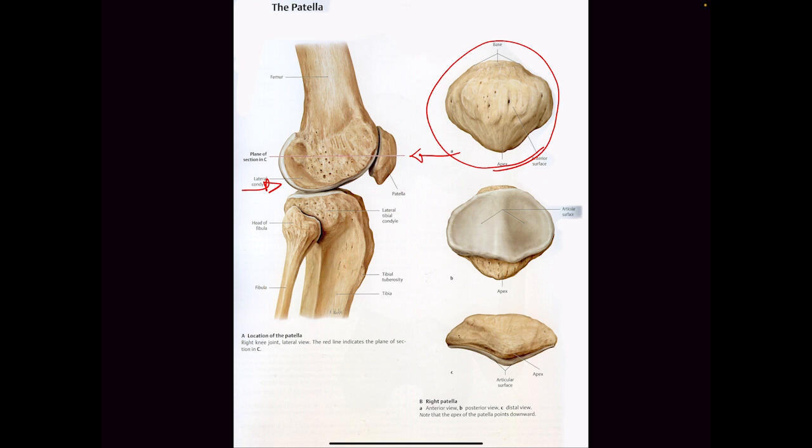Does anyone know where else we have sesamoid bones in our body? Hands and feet. All of the bones in your wrist are sesamoid bones. All of the bones at the base of your foot are sesamoid bones because they're trying to keep the muscles in line, but they're broken into smaller bones so they can allow for range of motion.